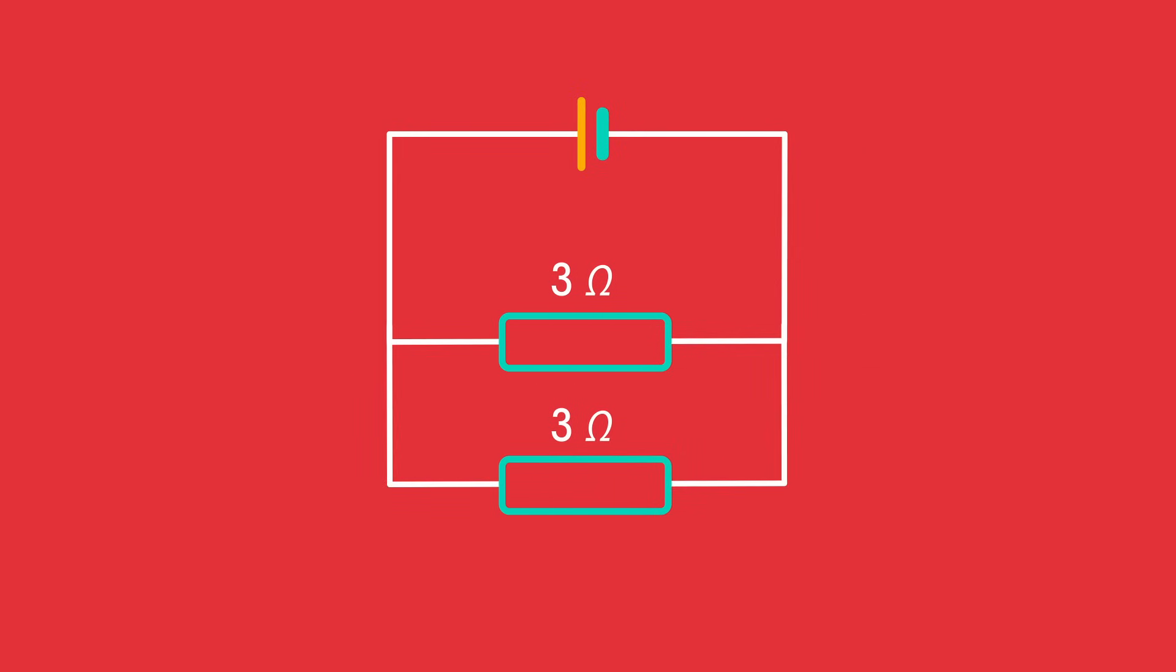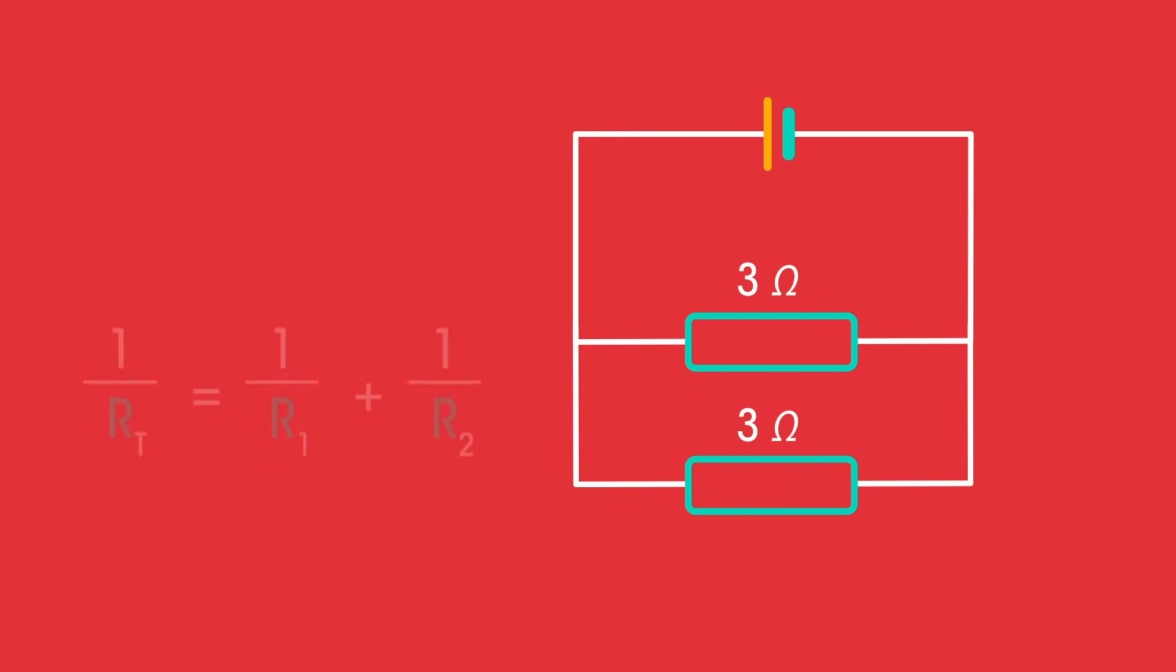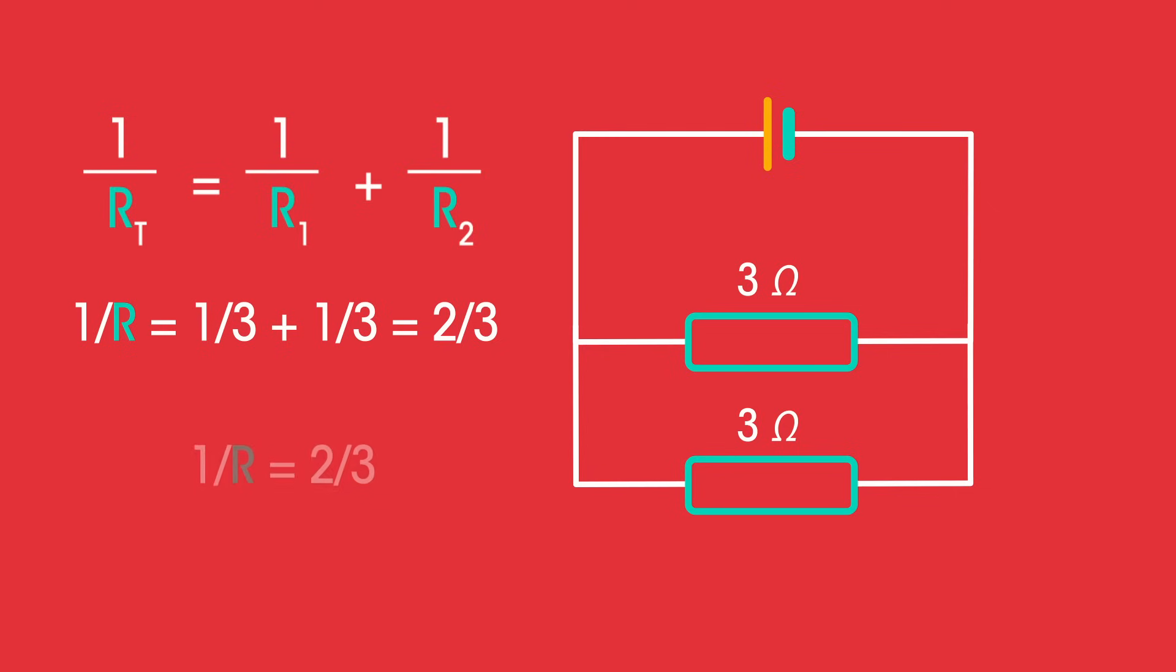But when in parallel, we use this formula. In this example, we have 1/r = 2/3, so r = 3/2, which equals 1.5 ohms. The total resistance is lower than each individual resistor.